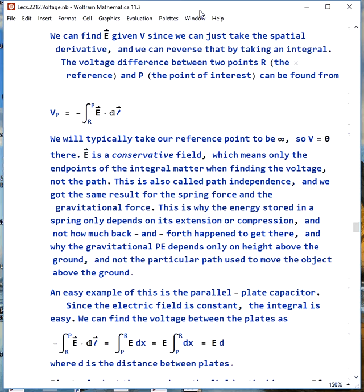Since E is a conservative field, that means only the endpoints of the integral matter. It's path independent. We had the same thing happen for the spring force and the gravitational force. This is how we can define a potential energy, and this is why when we look at the potential energy stored in a spring, all that matters is how much it's been extended or compressed from its rest length, and not how much back and forth had to happen for it to get there. Gravitational potential energy depends only on the height above the ground, and not the particular path used to move the object back and forth around above the ground.